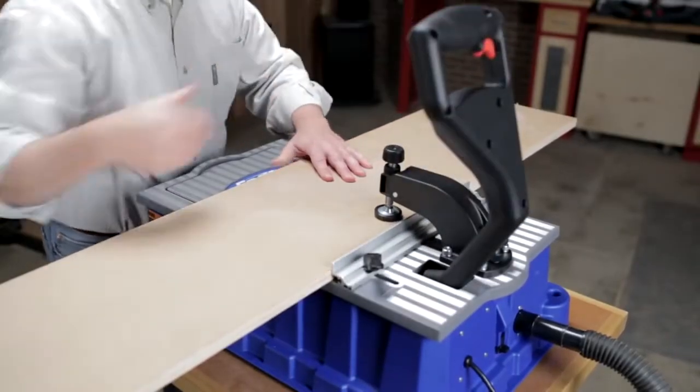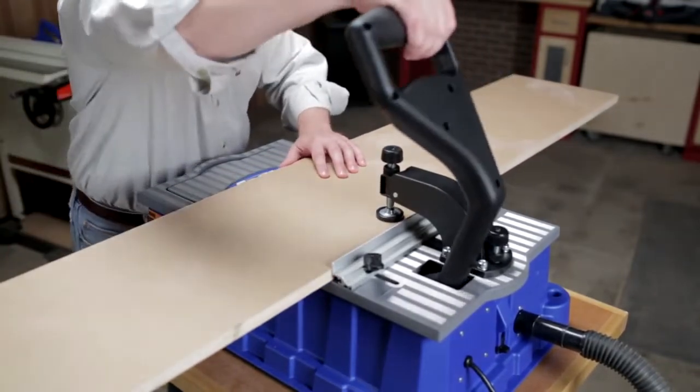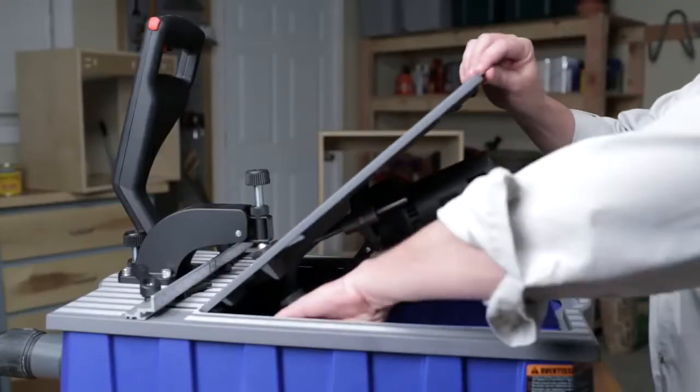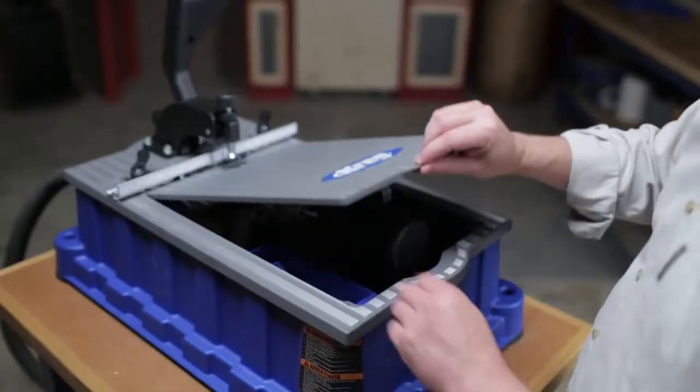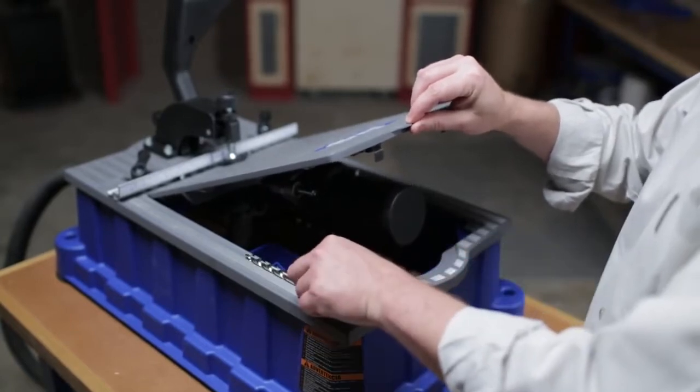Even with this portability, the Foreman still features a large table to hold big boards and support pieces made from sheet goods. The table flips up to allow easy access to the motor and quick-change drill chuck, and to a built-in storage tray that keeps extra bits and accessories accessible but out of the way.